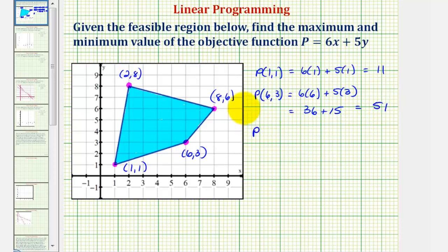Next we have P(8, 6), which is equal to 6 times 8 plus 5 times 6, which gives us 48 plus 30, which equals 78.